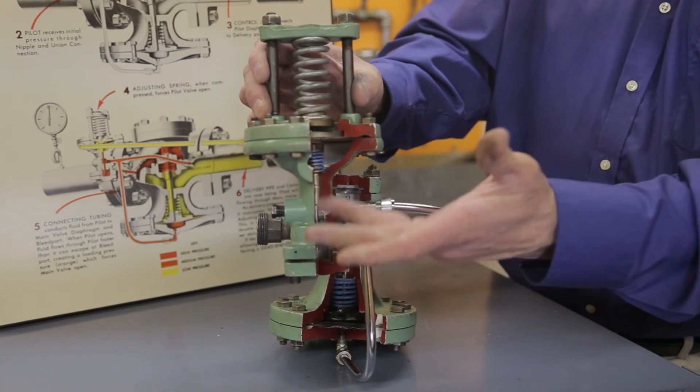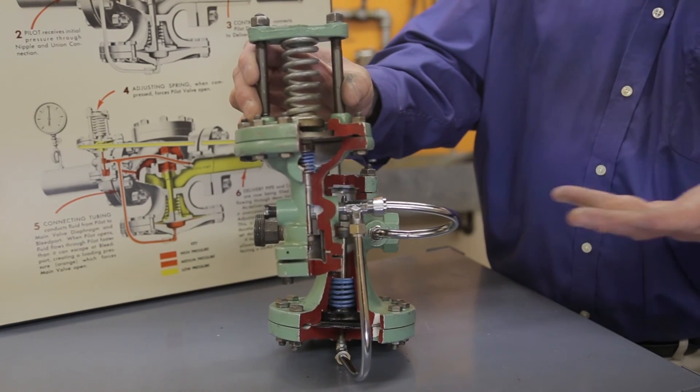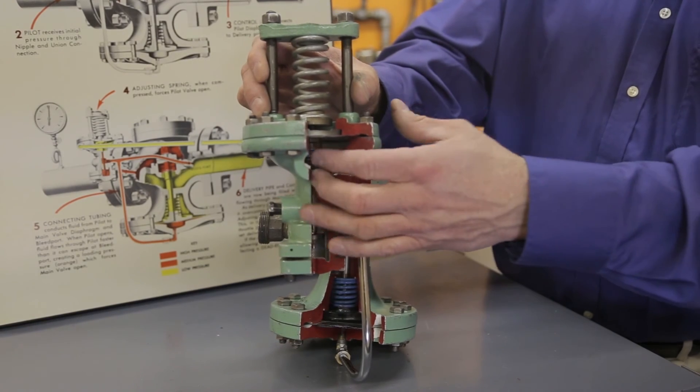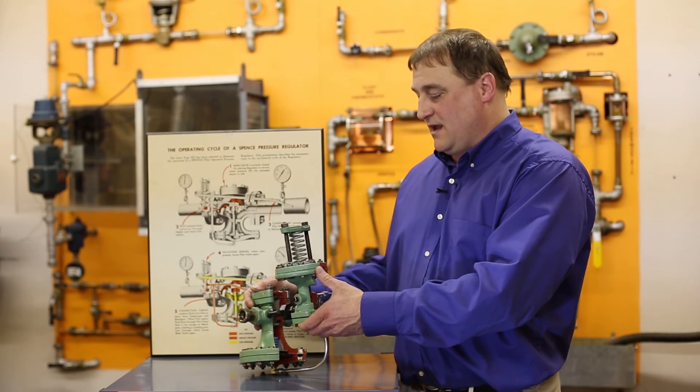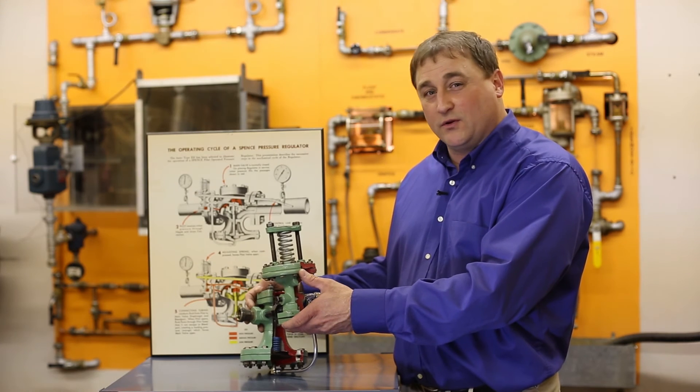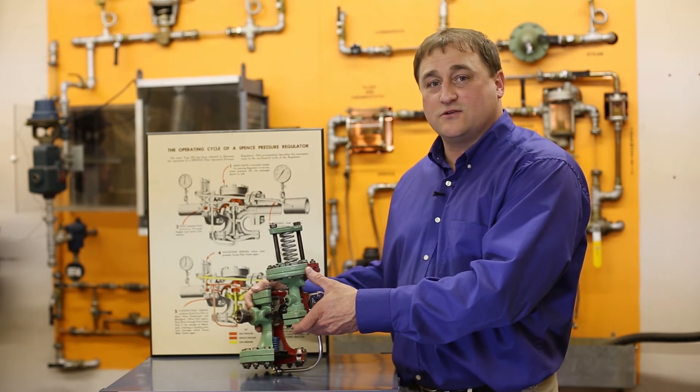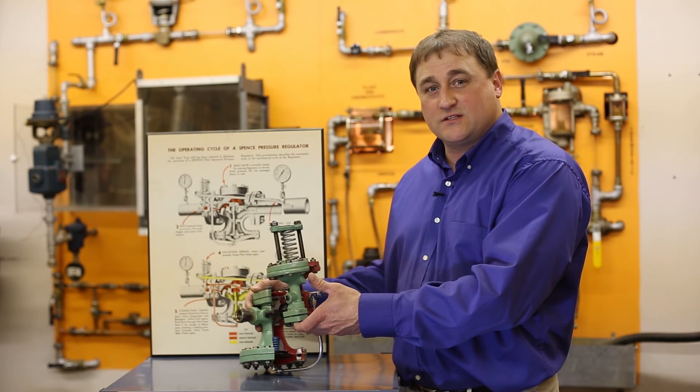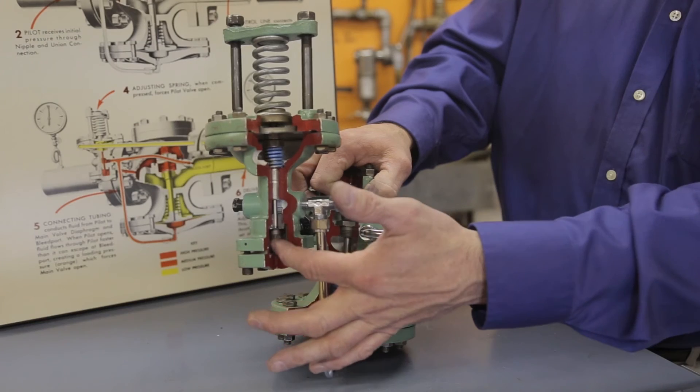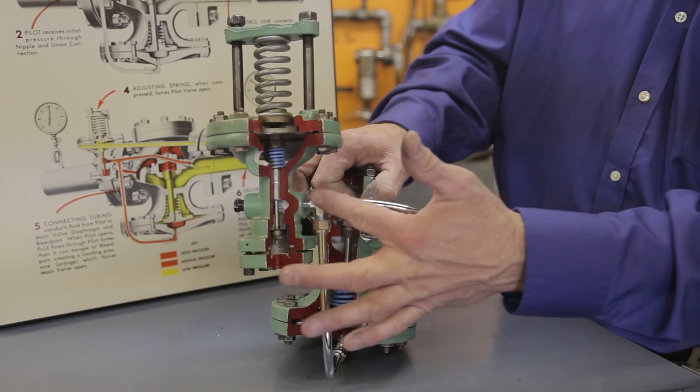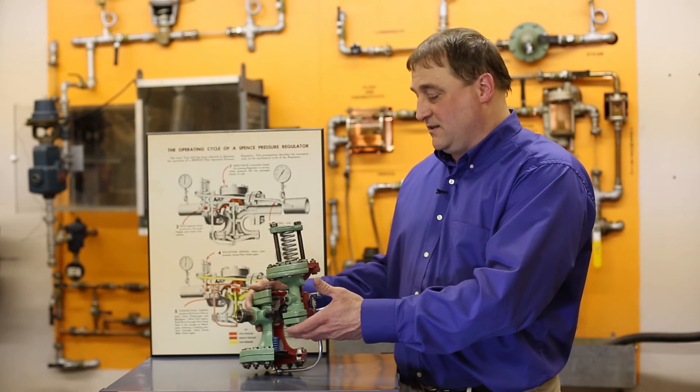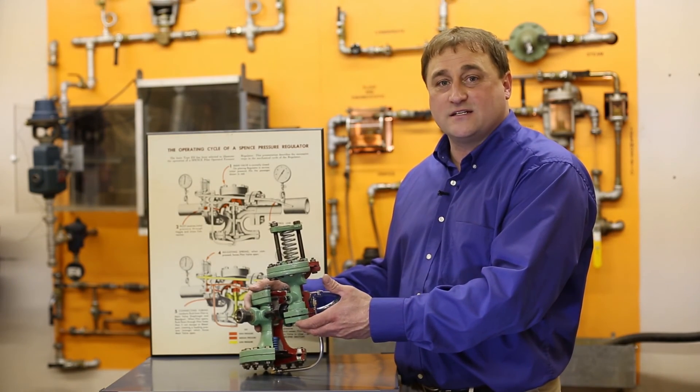Where would a pilot-operated pressure-reducing valve be used? Typically, we see these applications on steam, for example, where we want to run things like building automation, HVAC units, shell and tube heat exchangers, low-pressure steam applications such as humidification, and basically your building heating demands that utilize low-pressure steam. These valves can also be used on other gases such